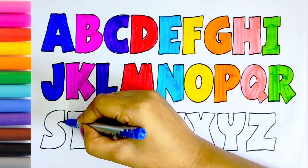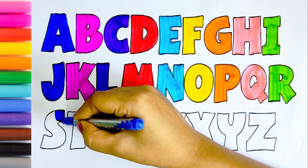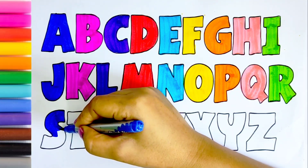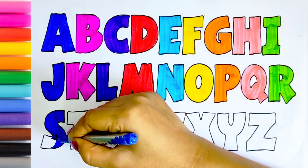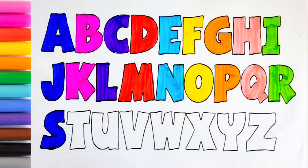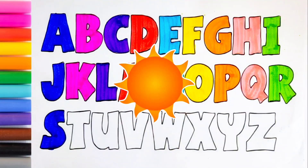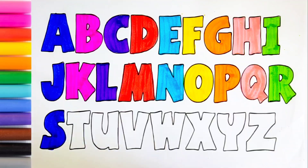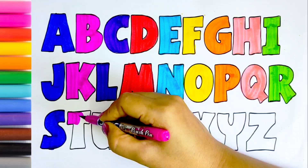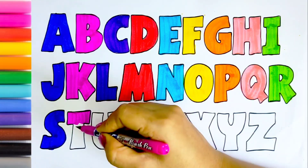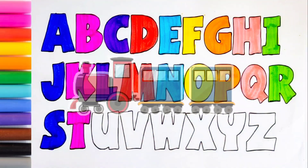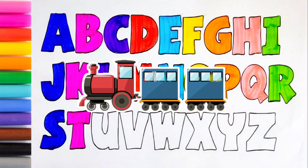Blue color. S. A, B, C, D, E, F, G. S for sun, S for sun. Pink color. Now I know my ABCs, next time won't you sing with me. D for train, D for train.